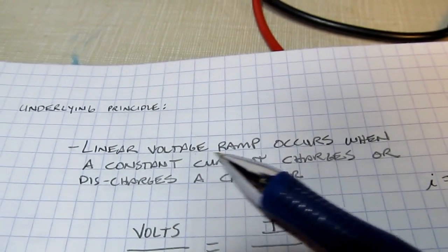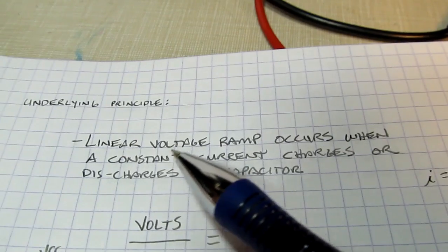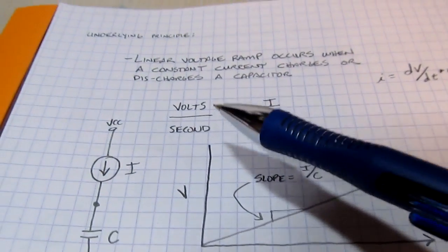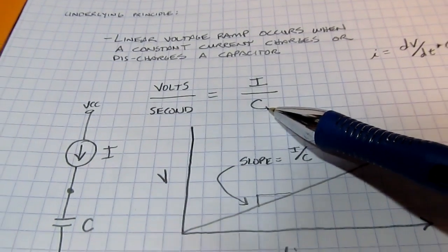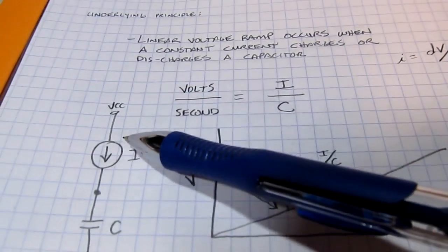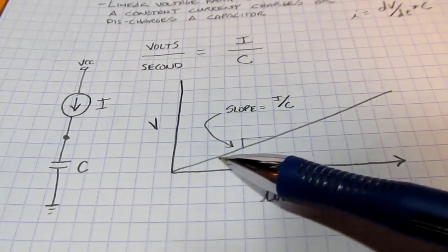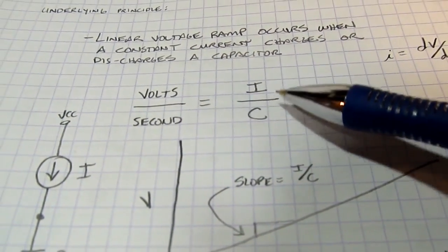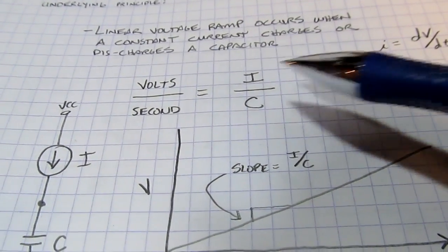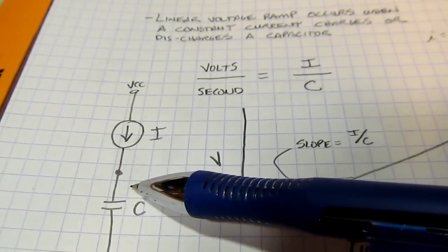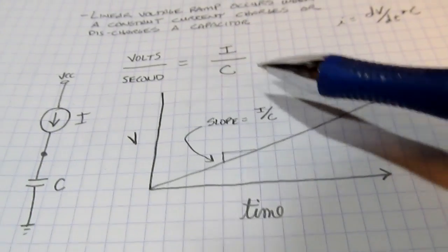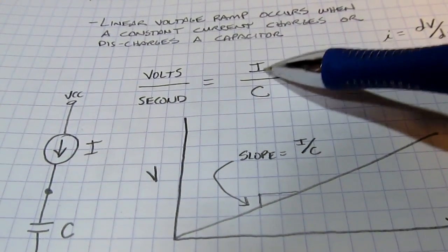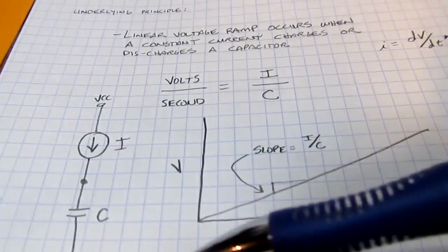The underlying principle is that a linear voltage ramp will occur on a capacitor when a constant current is used to charge or discharge it. With a constant current and a fixed capacitor value, the voltage on the capacitor will increase linearly. The slope of that line is simply equal to the current divided by the capacitance, in volts per second. Removing charge reverses the slope using that same relationship.